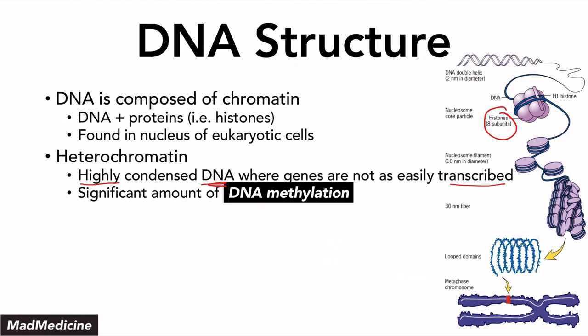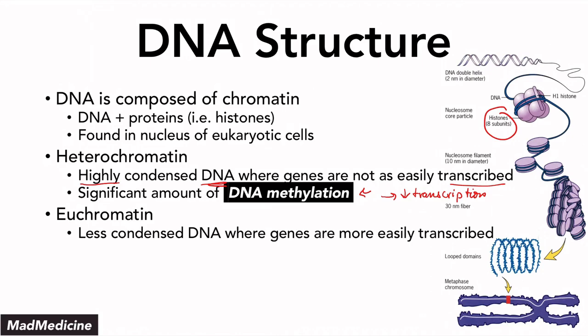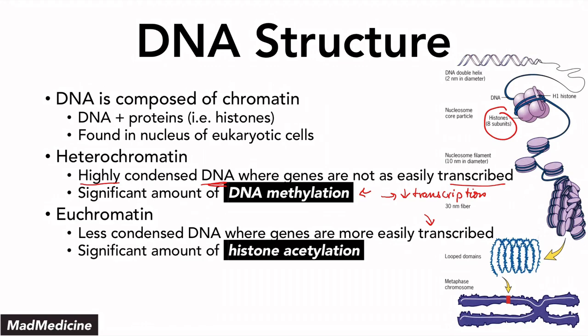Heterochromatin has a significant amount of DNA methylation — high DNA methylation means low transcription. In upcoming videos, we'll discuss DNA methylation and histone acetylation in more detail. Then you have euchromatin, which is less condensed DNA. Euchromatin allows you to easily transcribe that DNA and create RNA and proteins. In this structure, there is a high amount of histone acetylation occurring, which means a greater likelihood of transcribing those genes.